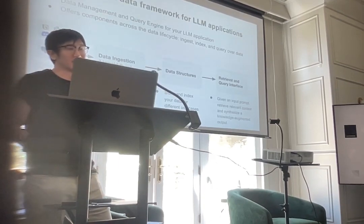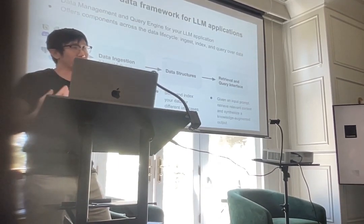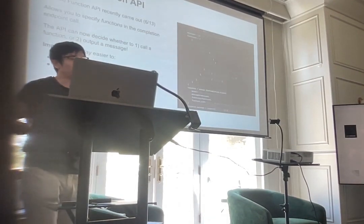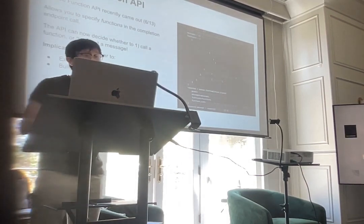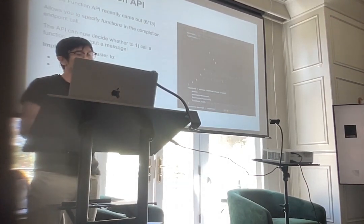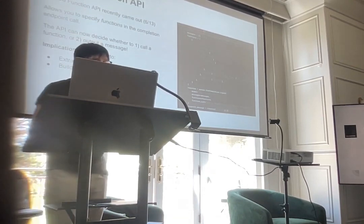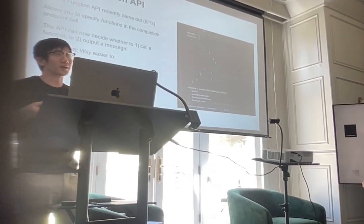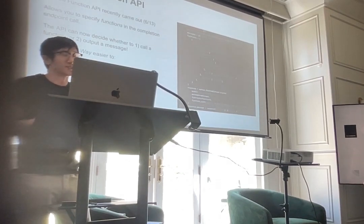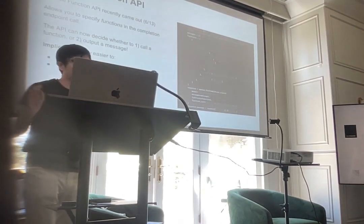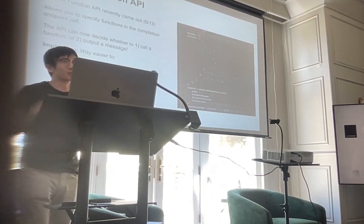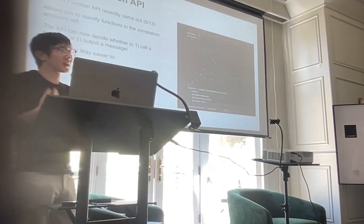Brief background on Lama Index: it's a data framework for data management and querying on top of your data if you're building an LLM app. The OpenAI Function API came out a few weeks ago. It allows you to specify functions in the completion endpoint — a set of function signatures — and then it can reason about whether to call a function or output a user message. This means you can extract structured data and more easily build expressive agents over your data.